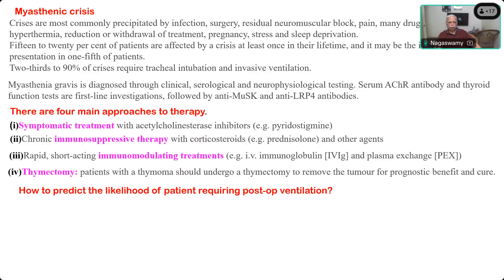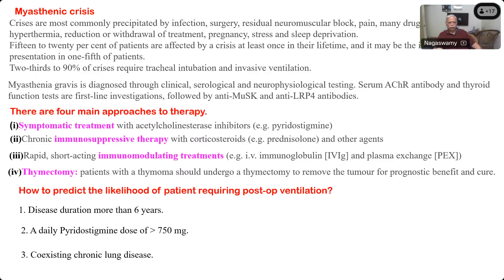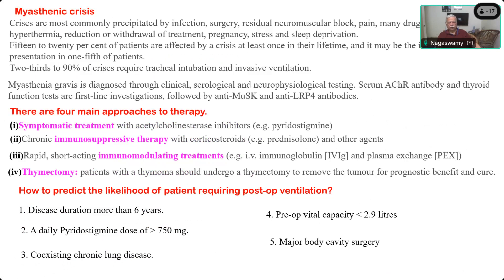To predict the likelihood of patients requiring post-operative ventilation: if they have bulbar or respiratory muscle involvement, disease duration more than 6 years, daily pyridostigmine dose more than 750 mg, existing chronic lung disease, and vital capacity less than 2.9 liters, or any major comorbid conditions — these are all factors where patients tend to require post-operative ventilation.